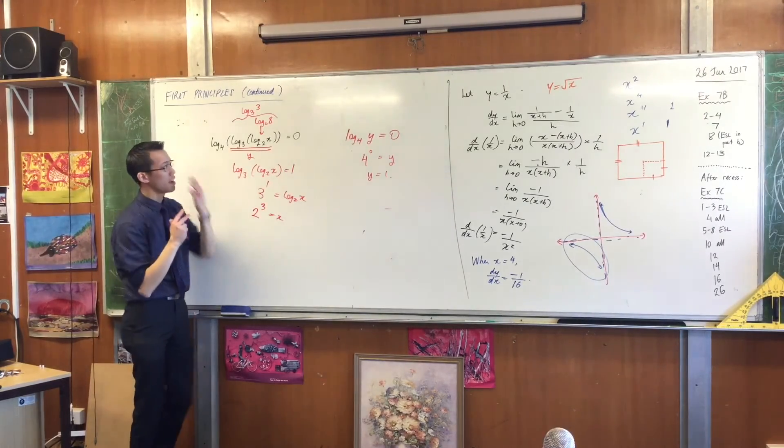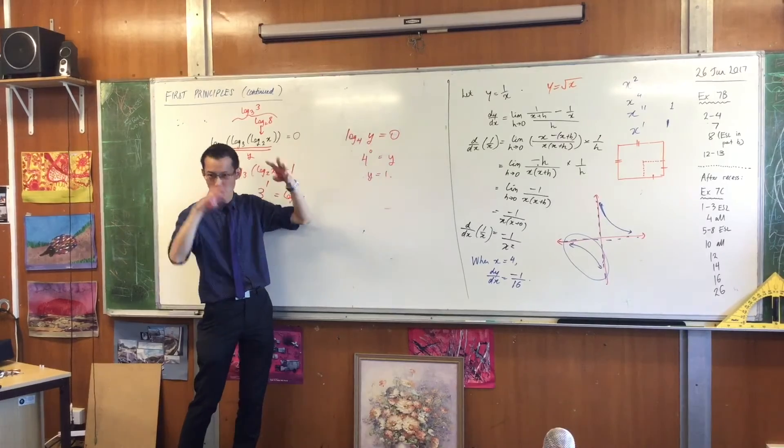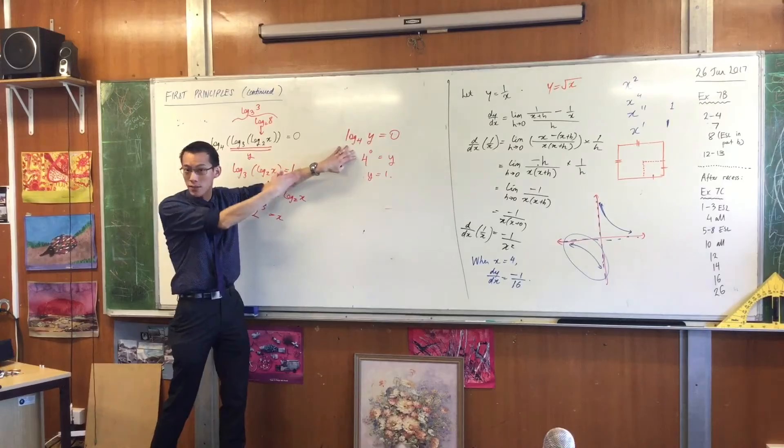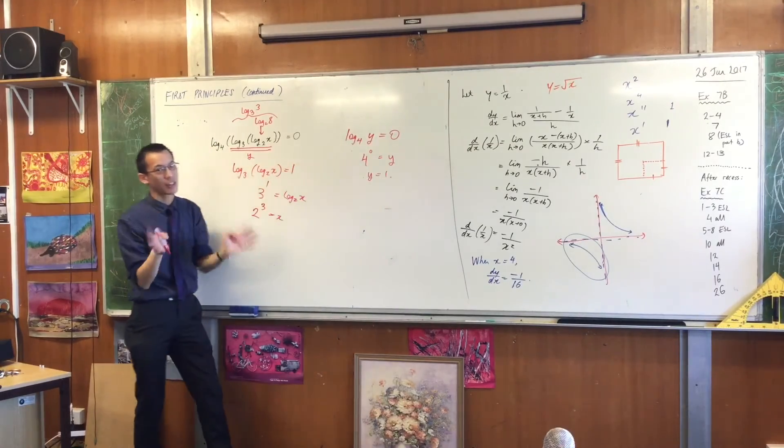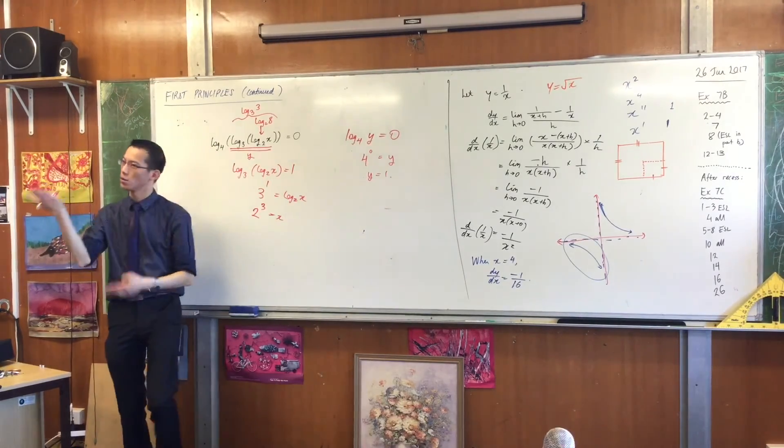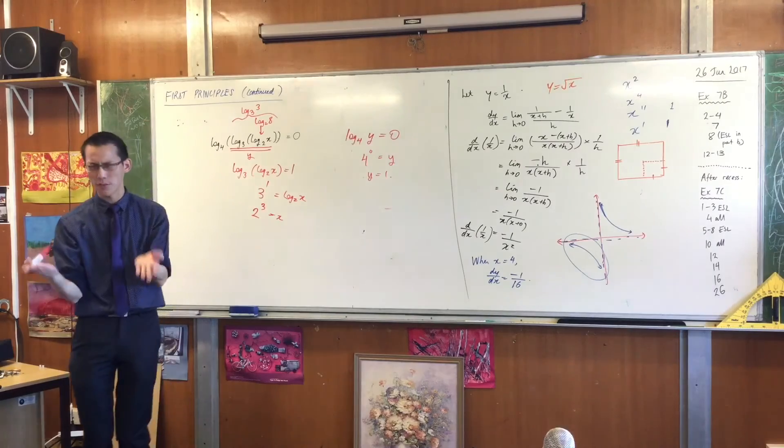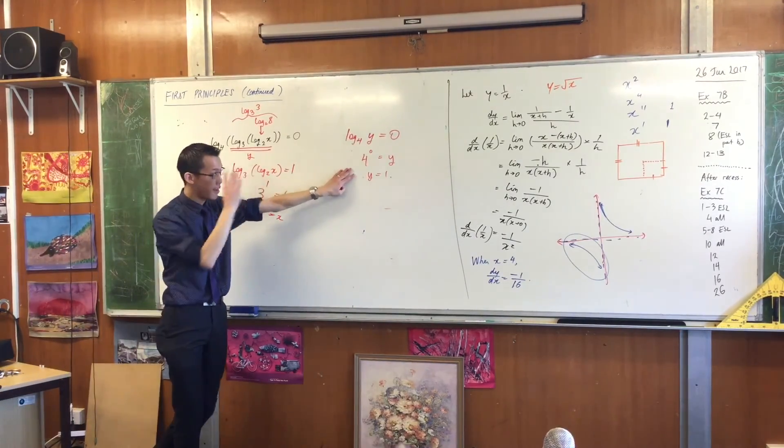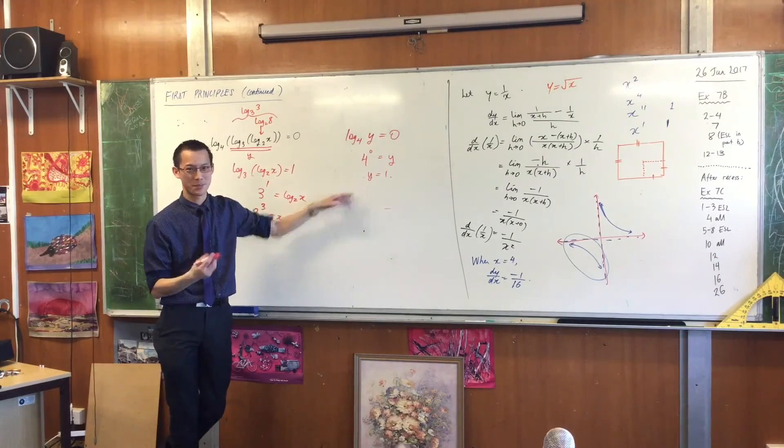So two things there. Number one, bring the problem down to size. It looks intimidating, but you know how to solve simpler versions of this, so take advantage of that. Secondly, you've got to know how to convert from a log to an exponential equation, which is still confusing. We can still rearrange the numbers incorrectly, so this is the kind of thing you would put on your page of notes.